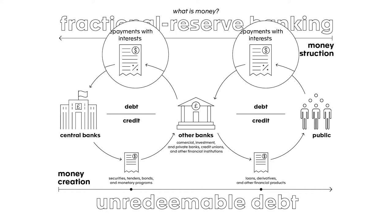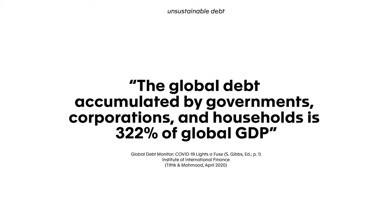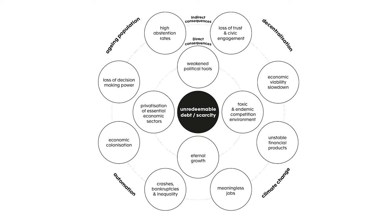To keep the wheels of the economy rolling, central banks then issue more credit and the cycle continues, eternally increasing the global amount of unredeemable debt, which is now more than 322% of global GDP. This radical design flaw leads to an endemic, toxic, and competitive environment, as well as many other societal problems that prevent states from committing to their social contract. So how might we create a mathematically viable form of state money?